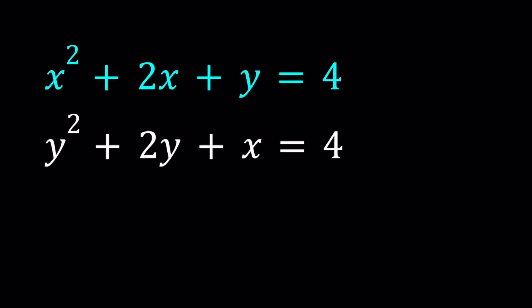Hello everyone. In this video, we're going to be solving a polynomial system. We have x squared plus 2x plus y equals 4, and y squared plus 2y plus x equals 4. So it's nice that we have the same number on the right-hand side. I'll be presenting two methods, and let's start with the first one.